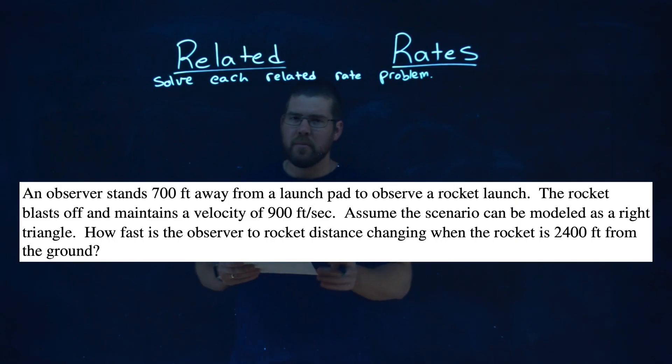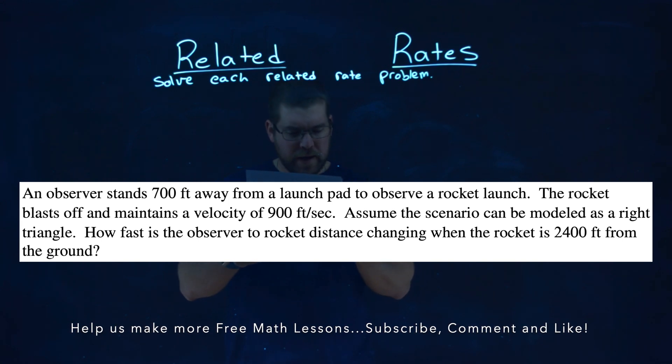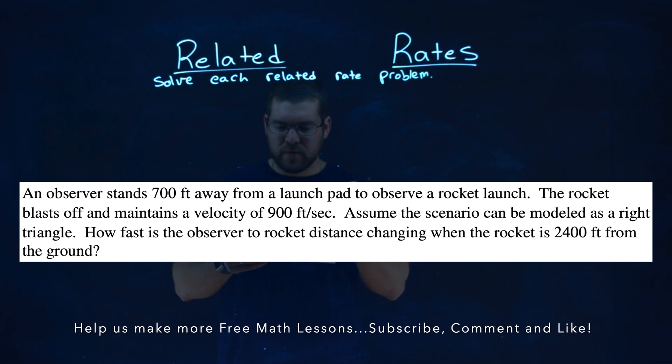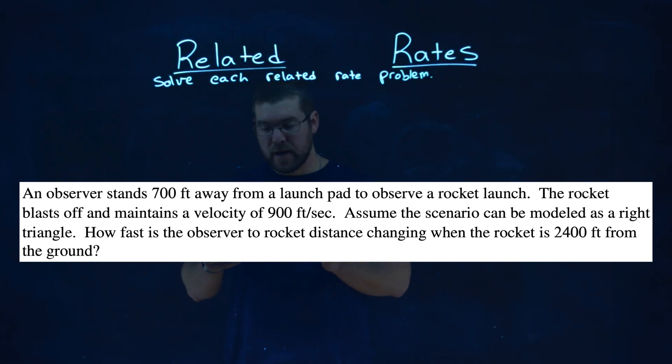We're given this problem right here. An observer stands 700 feet away from a launch pad to observe a rocket launch. The rocket blasts off and maintains a velocity of 900 feet per second. Assume the scenario can be modeled as a right triangle. How fast is the observer to rocket distance changing when the rocket is 2,400 feet from the ground?